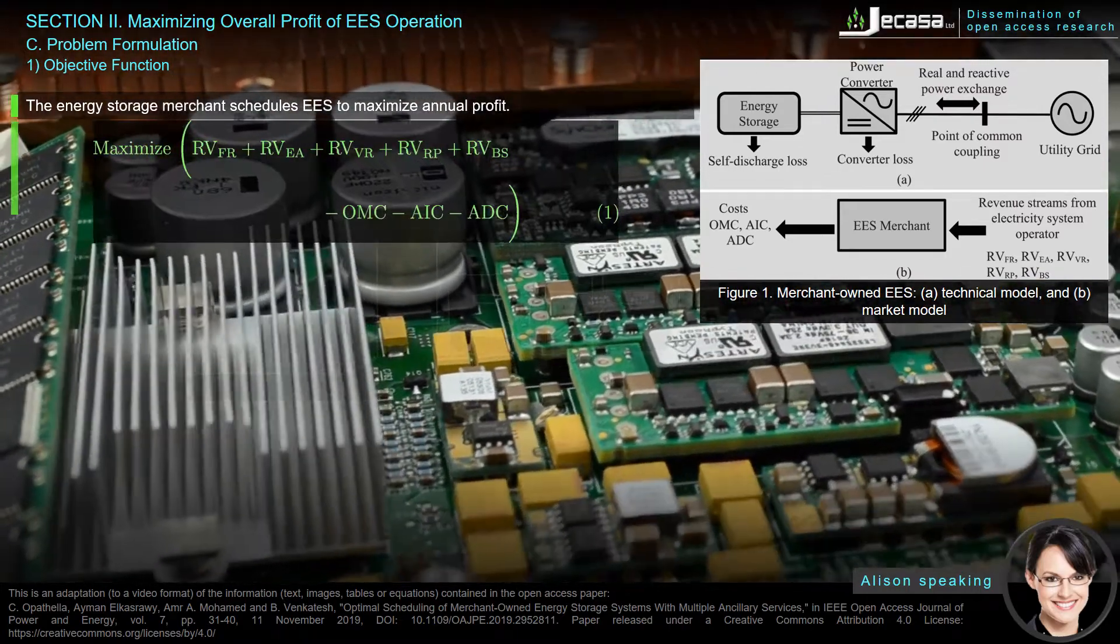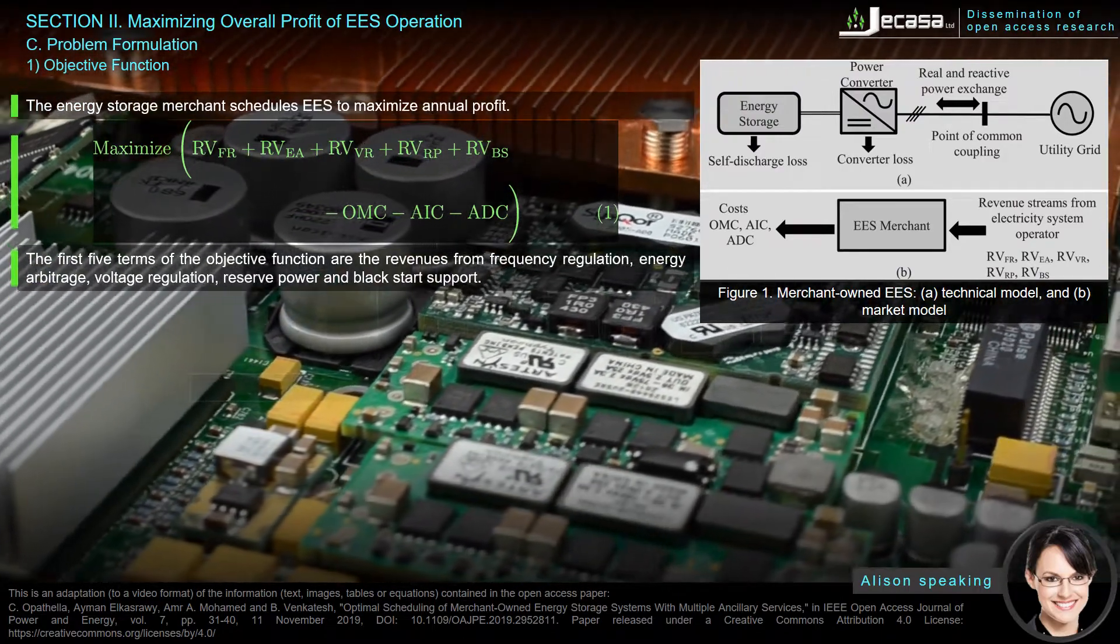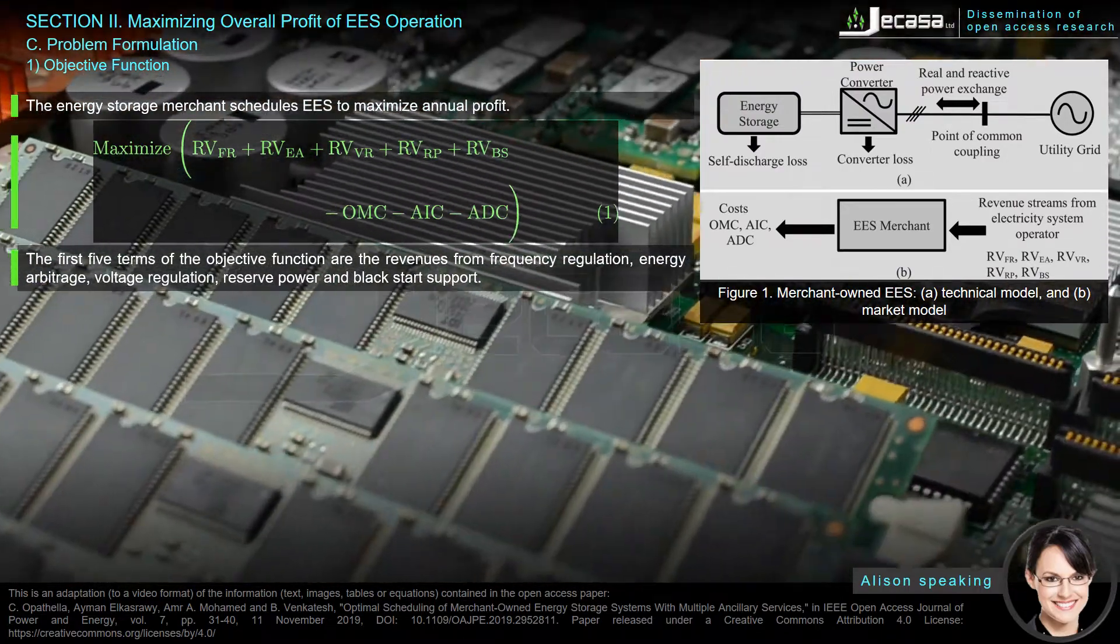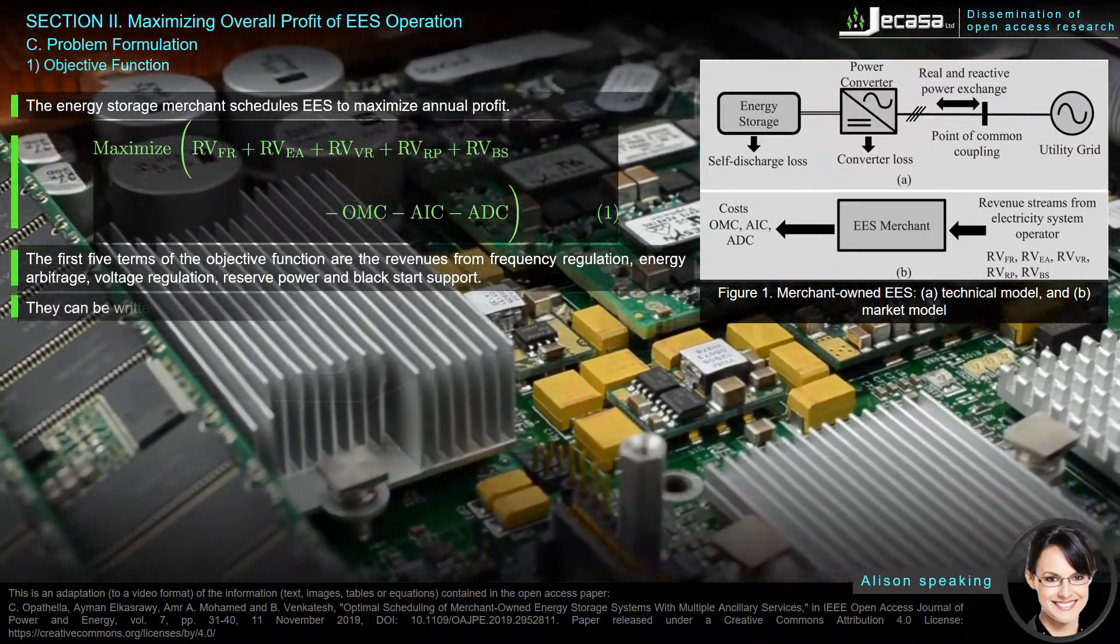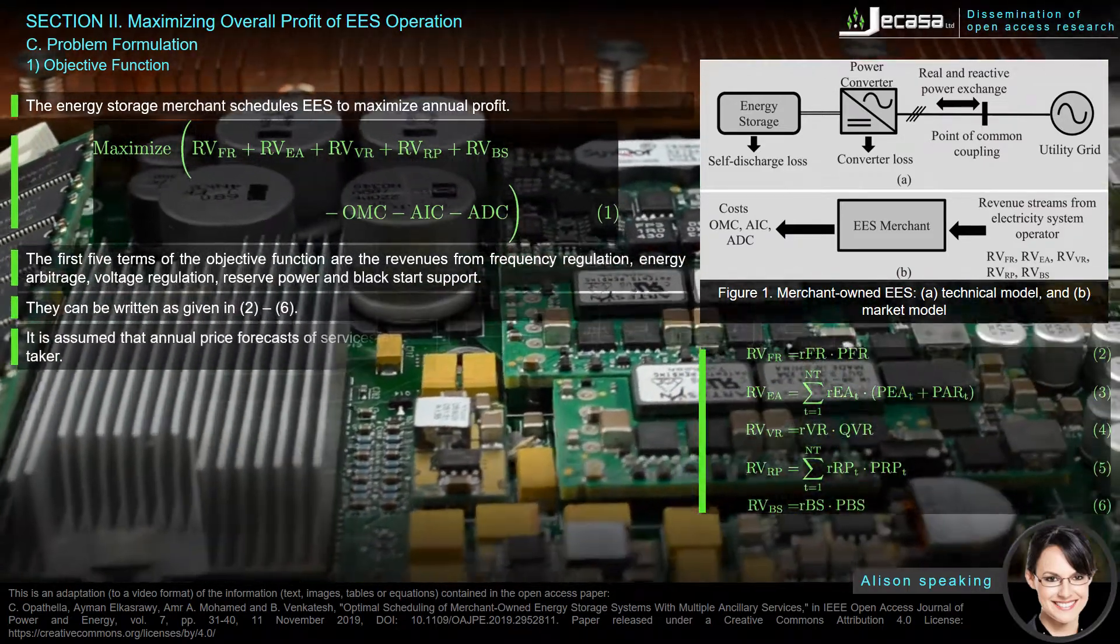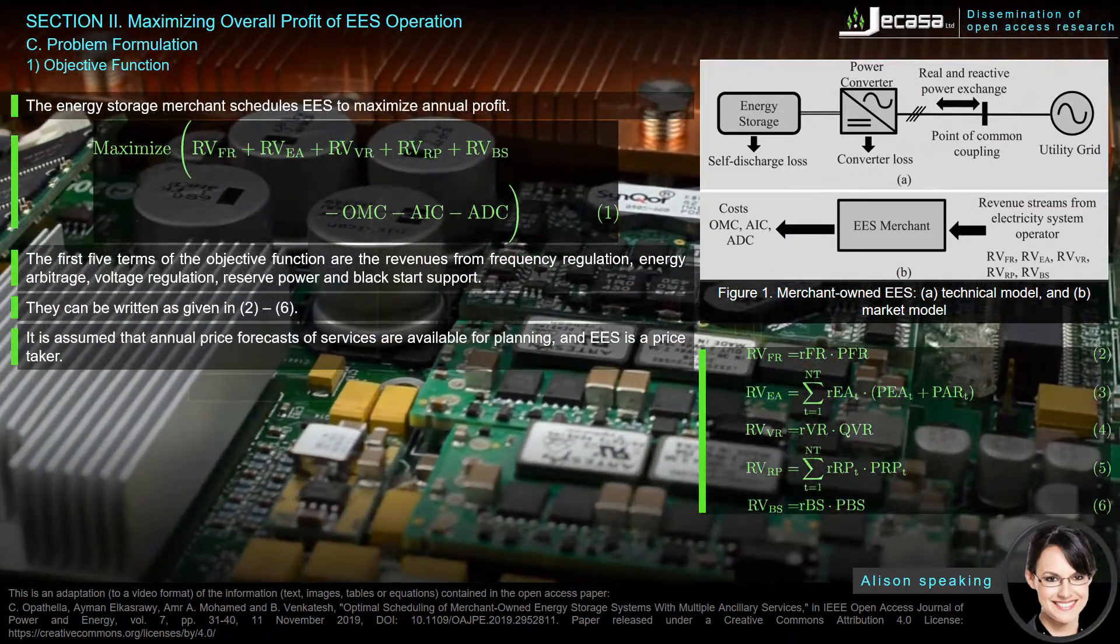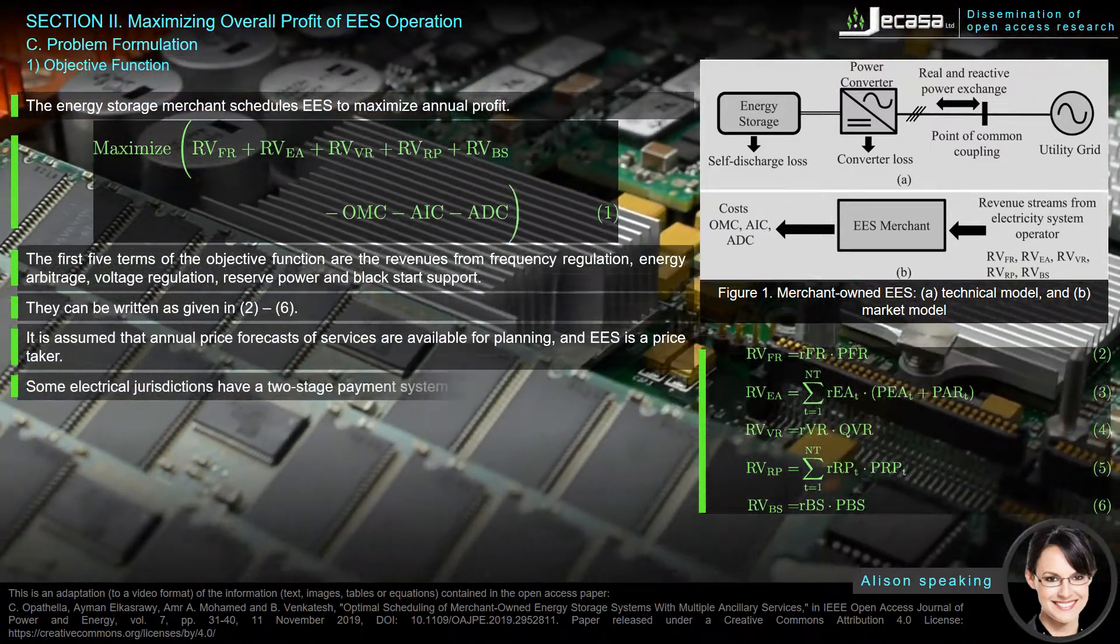The first five terms of the objective function are the revenues from frequency regulation, energy arbitrage, voltage regulation, reserve power, and black start support. They can be written as given in equations (2) through (6). It is assumed that annual price forecasts of services are available for planning and EES is a price taker.